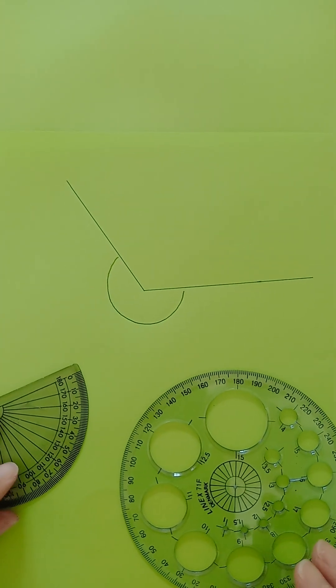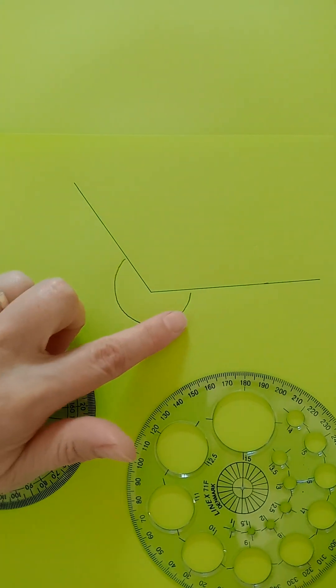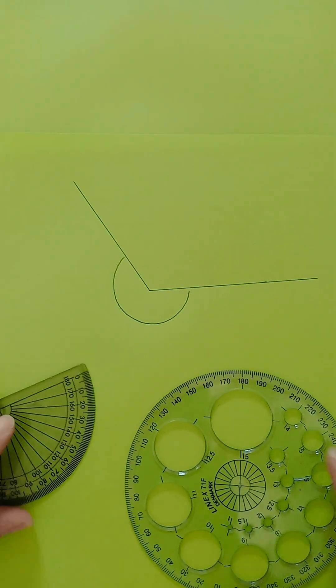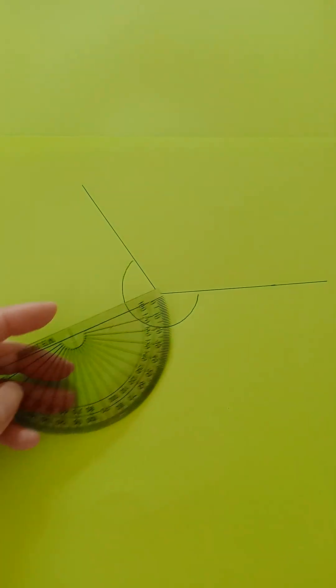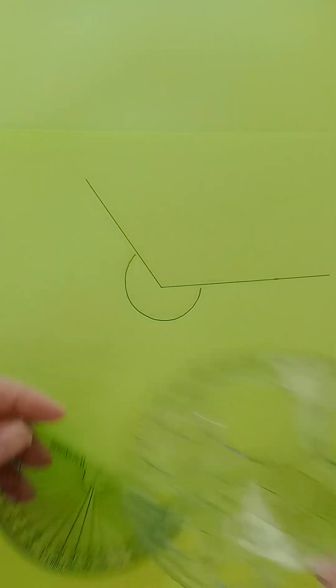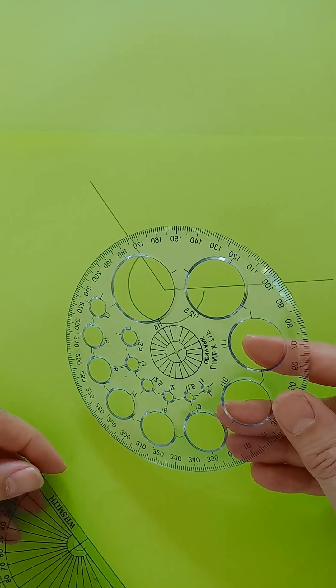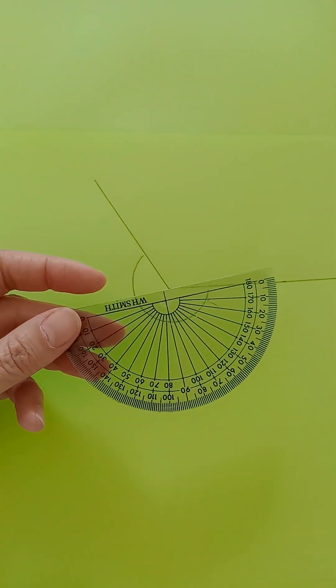Here's how to deal with measuring a reflex angle. You could have one of these two types of protractor. You could have a circular protractor, or you could have a semicircular protractor.